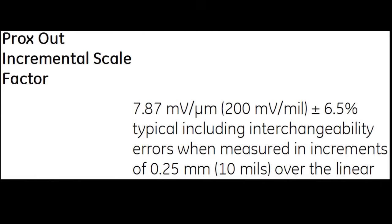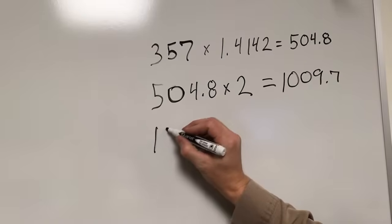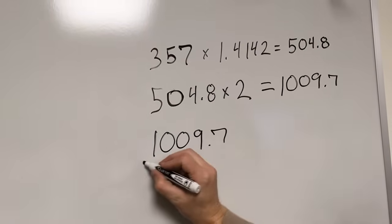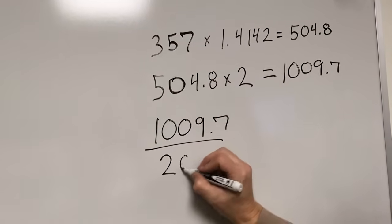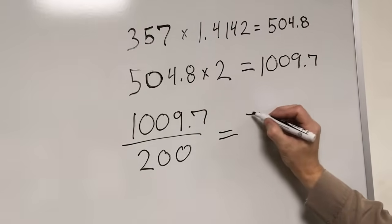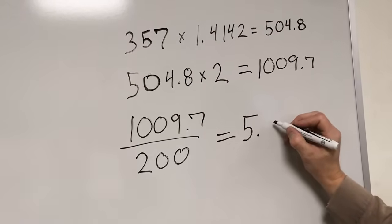Now, we must apply the incremental scale factor, or ISF, to this measurement to convert the voltage change to a change in distance. If you want to determine the amount of travel the proxy probe detected using this ISF, you would divide the peak-to-peak voltage by 200. The number you get will represent the amount of distance the assembly measured.